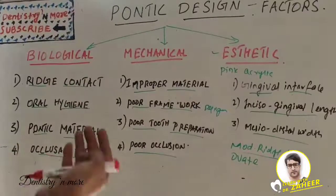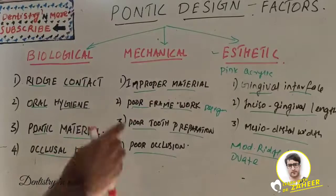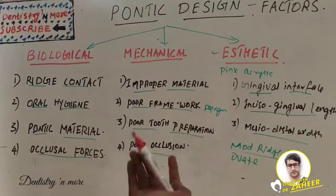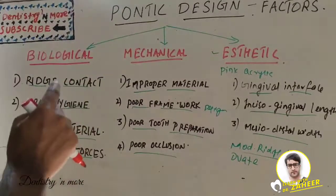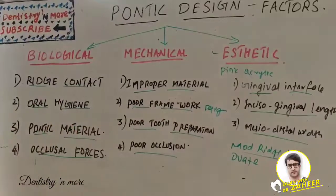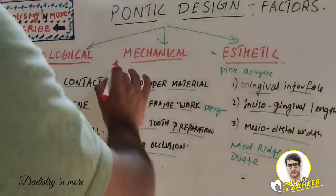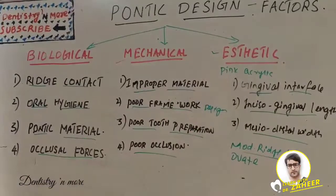When metal-ceramic pontics are chosen, extending the porcelain onto the occlusal surface to achieve better aesthetics should be carefully evaluated, as there is a high chance of fracture when extended to the occlusal site. Porcelain may also abrade the opposing dentition if the occlusal contacts are on enamel or dentine, so we need to carefully consider where contacts are placed.